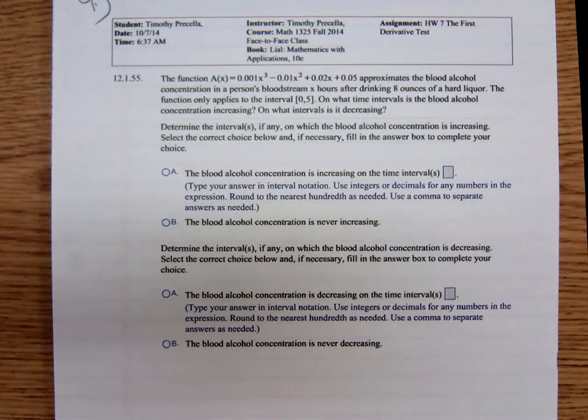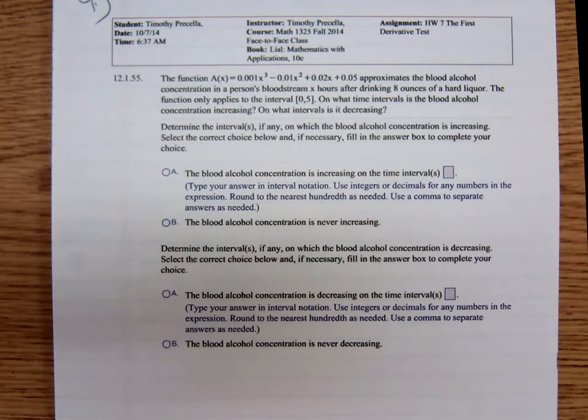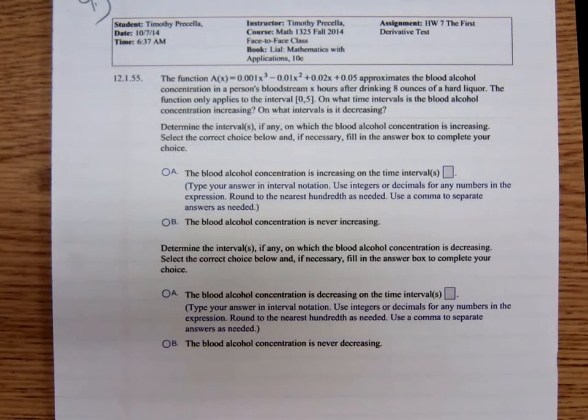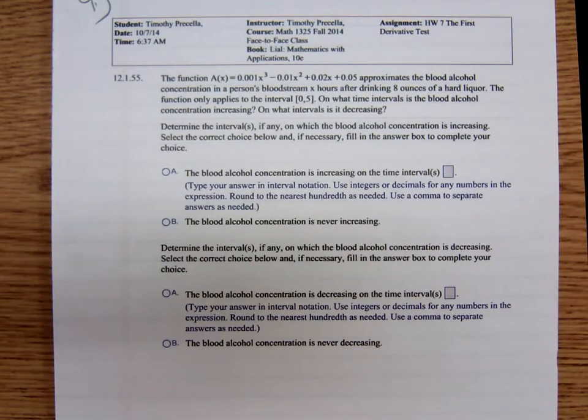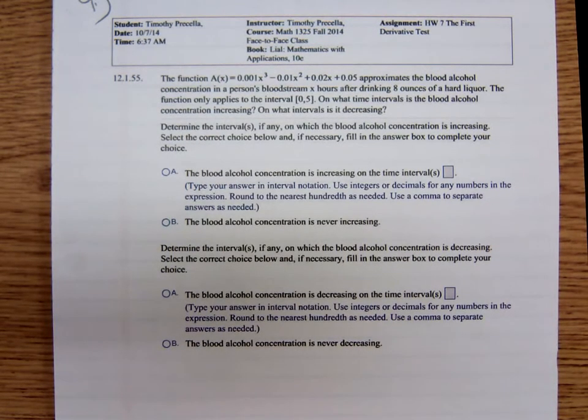Here's the problem. We're given a function that approximately, this function approximates the blood alcohol concentration in a person's bloodstream x hours after drinking eight ounces of hard liquor. The function only applies to the interval from zero to five.